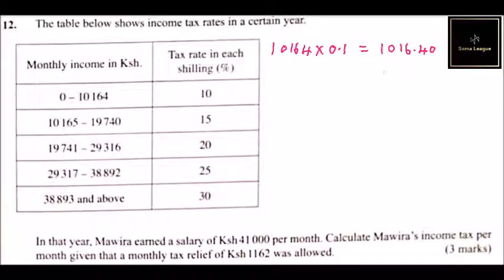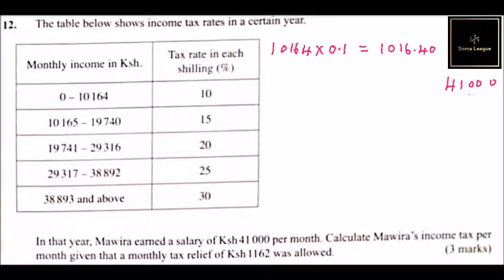To get the second bracket, we write Mawera's salary of forty-one thousand shillings, then subtract what has already been taxed — that is ten thousand one hundred and sixty-four shillings.